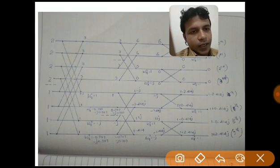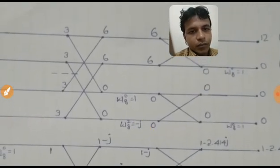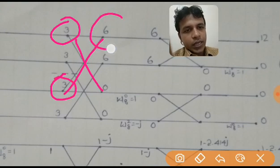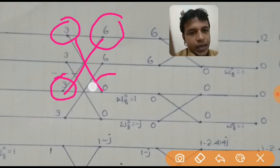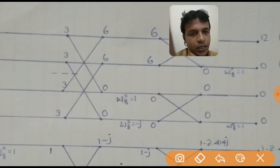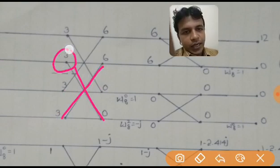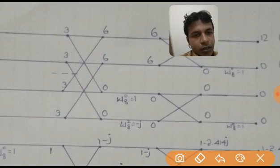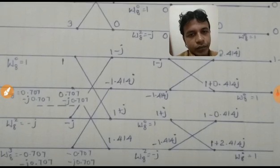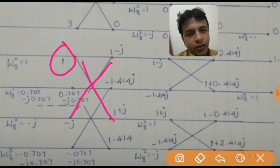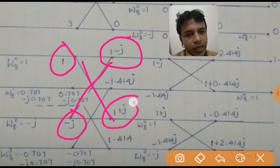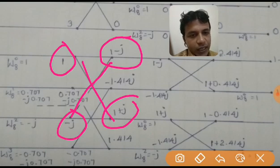For the first butterfly: A = 3, B = 3, so A+B = 6 and A−B = 0. For the second butterfly: A+B = 6 and A−B = 0. For the third butterfly: A = 1, B = −j, so A+B = 1 + (−j) = 1 − j, and A−B = 1 − (−j) = 1 + j. For the fourth butterfly: A = 0.707 − j·0.707 and B = −0.707 − j·0.707. A+B: the real parts cancel, leaving only the imaginary terms, giving −1.414j. A−B: the imaginary parts cancel, giving 0.707 + 0.707 = 1.414.